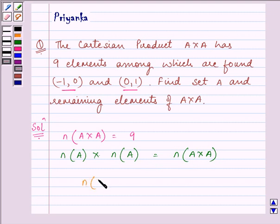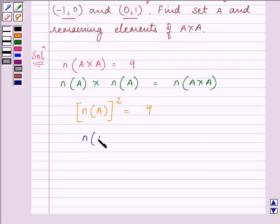The number of elements in A×A is 9, so the number of elements A has is the square root of 9, that is 3, since it cannot be negative.